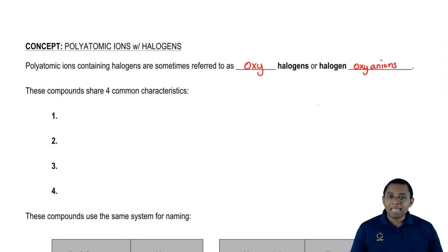When we say oxy, we mean that oxygen is present. So these polyatomic ions have halogens and oxygen. Remember, when we say anions, we mean a negative ion. A negatively charged ion is called an anion.